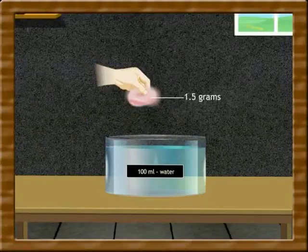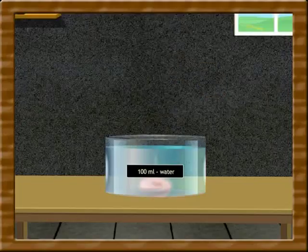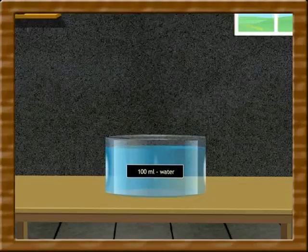Take 1.5 grams of soap and dissolve it in 100 milliliters of soft or distilled water. Mix it well and take 10 milliliters of this solution in a boiling tube.